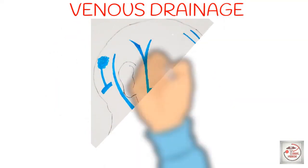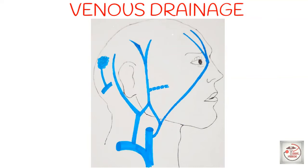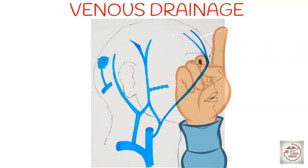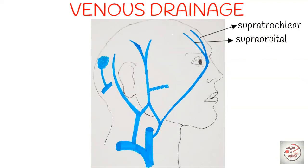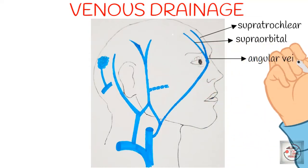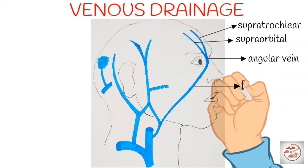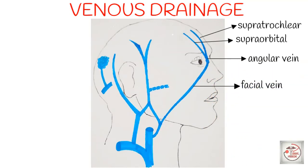Let's move on to the venous drainage of scalp. Scalp aur face ka venous drainage kaafi similar hota hai, but here we will focus only on scalp drainage excluding the face part. Veins jo hain, wo arteries ke parallel hi run karti hain, and names are also same as the arteries. So 5 arteries supply scalp, similarly 5 veins drain the scalp. Supratrochlear and supraorbital veins combine at the medial angle of the eye to form the angular vein, which continues downwards as the facial vein.